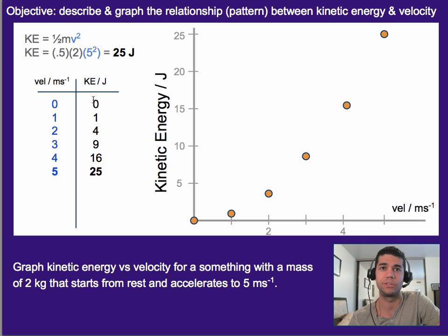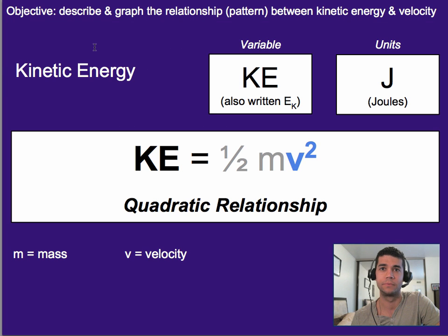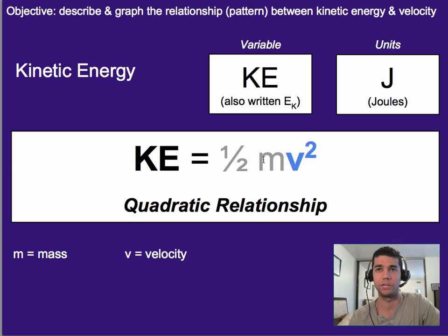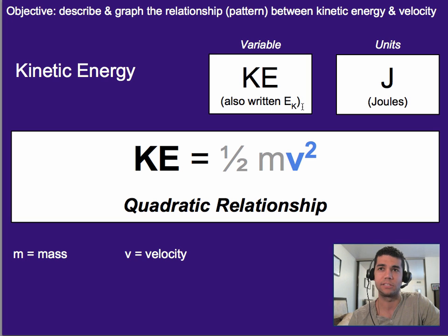We could go on and on, but this is just one case. We can see it is a quadratic trend, mainly because of the squared term on velocity. Kinetic energy is a quadratic relationship when comparing it to velocity. If you compare it to mass, then it's not quadratic. Also, kinetic energy is sometimes written as E with a subscript K — that tends to be the IB style notation, and you'll see other notations out there as well.